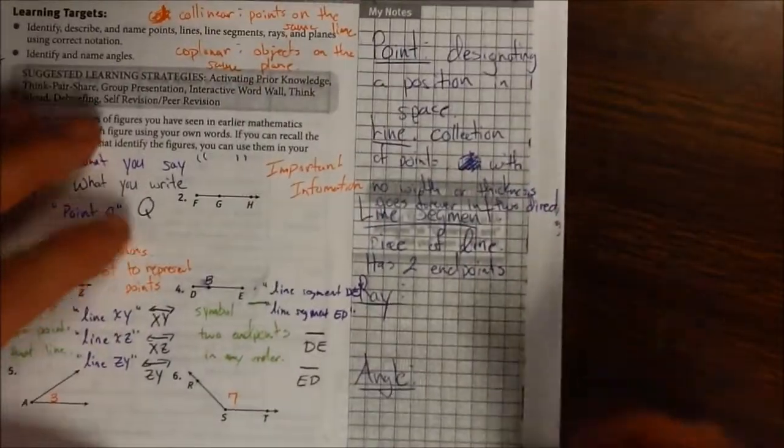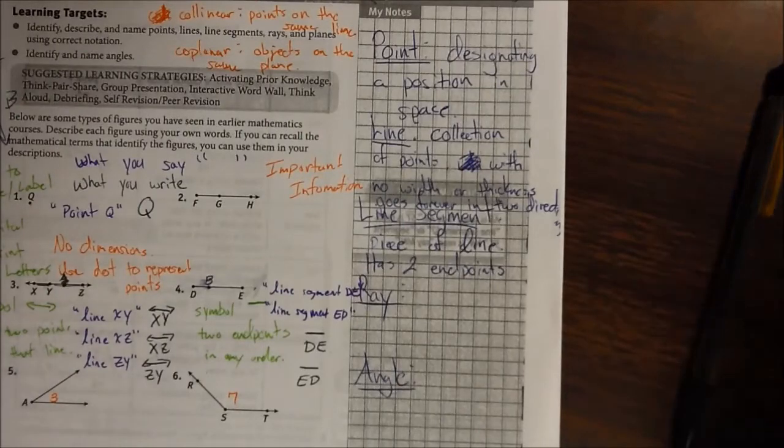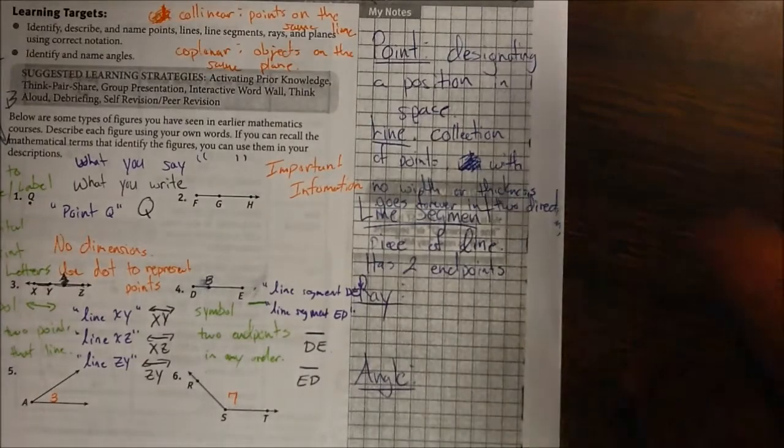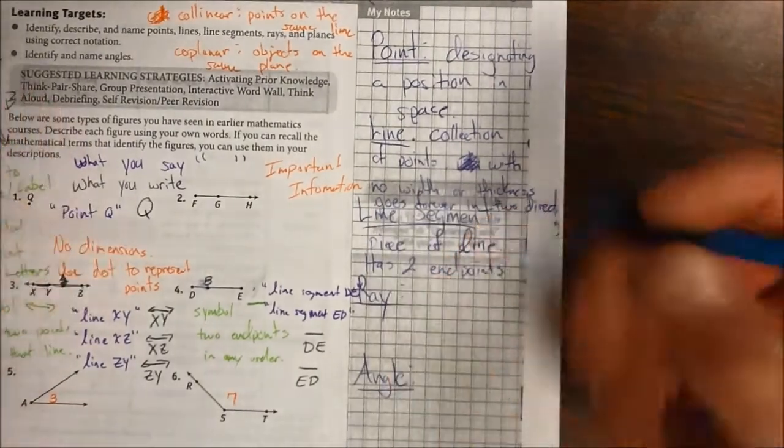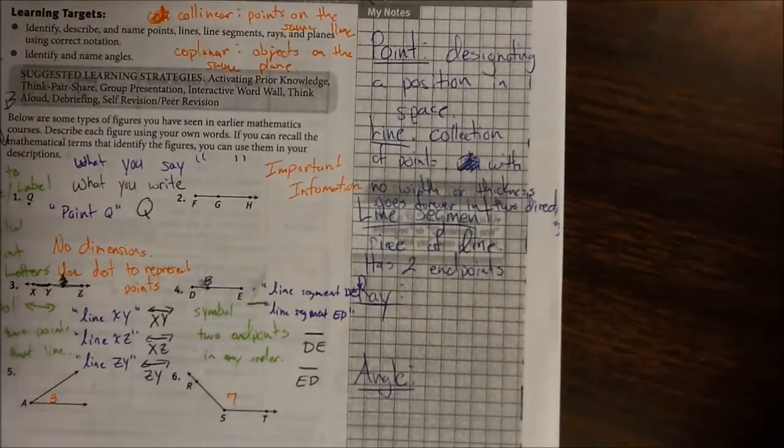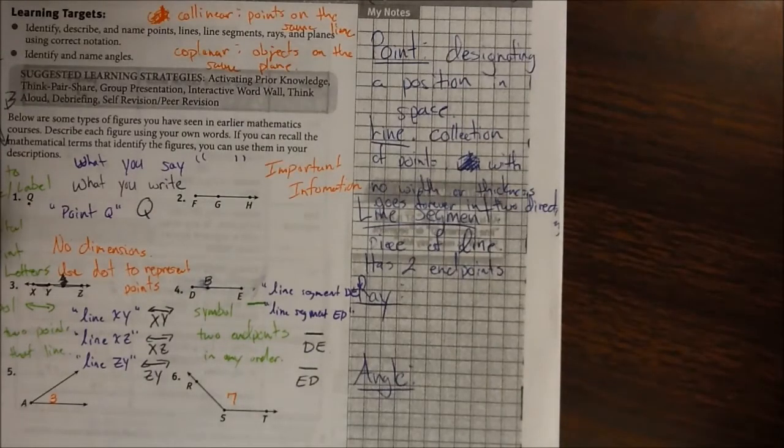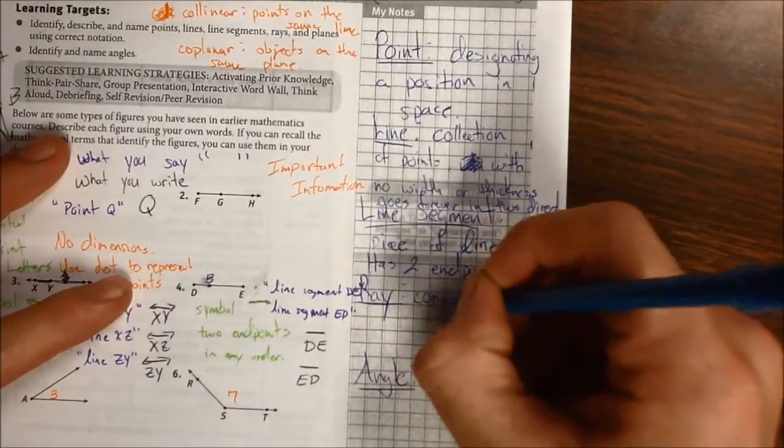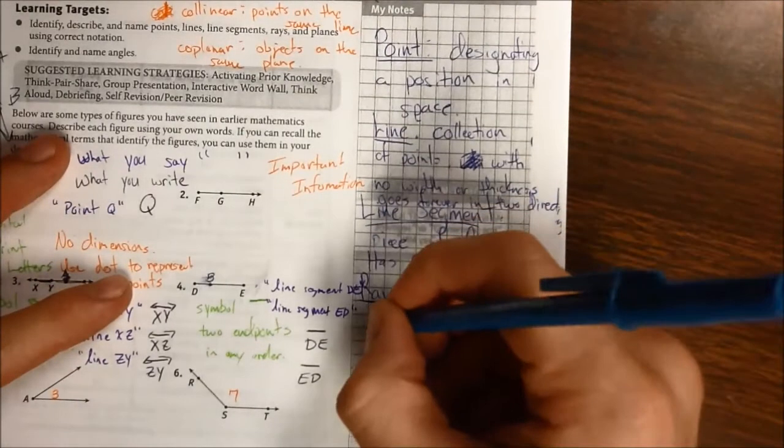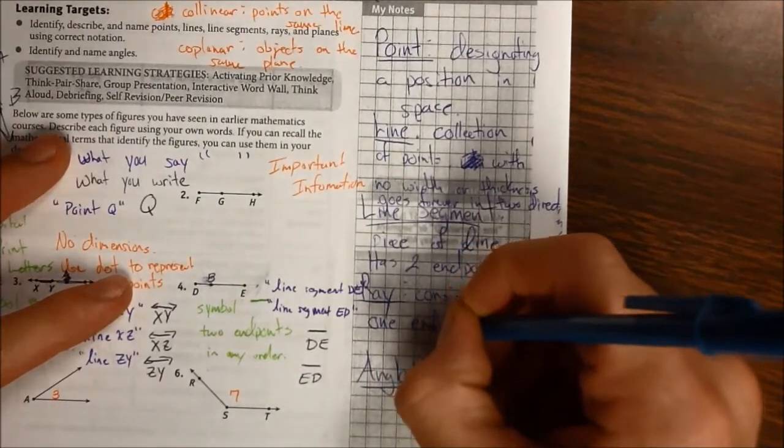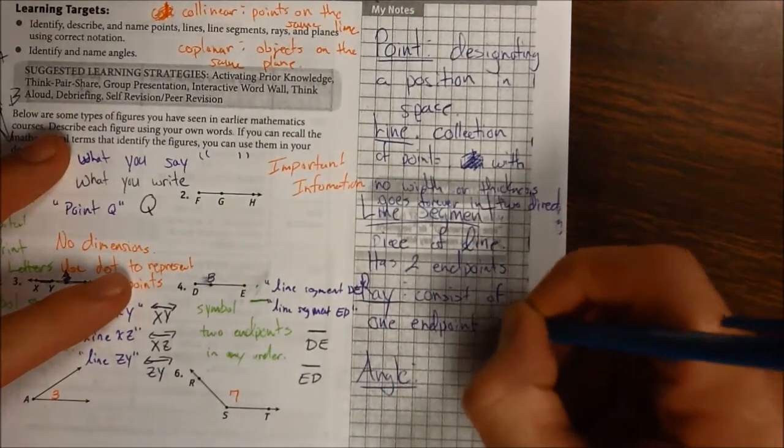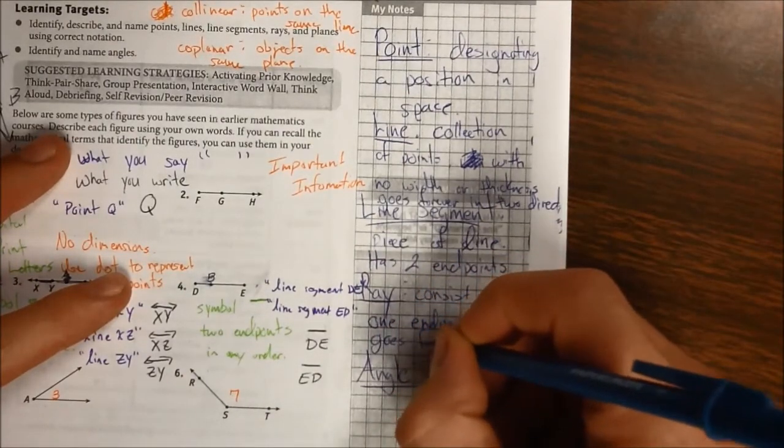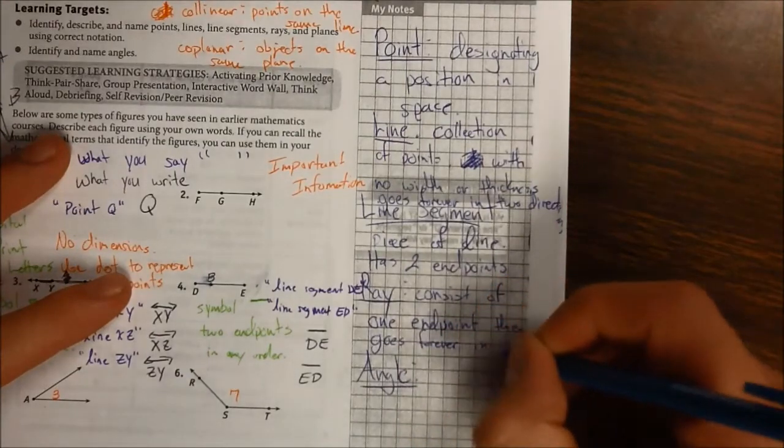So let's jump up to number two. Number two is a ray. Let's go ahead and define what a ray is. A ray consists, similar to a segment, a ray is kind of a piece of a line. Because a ray consists of one endpoint, then goes forever in one direction.